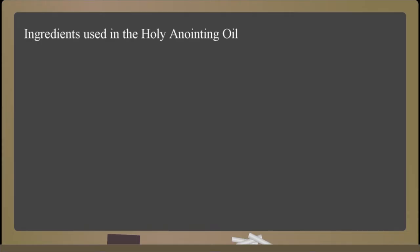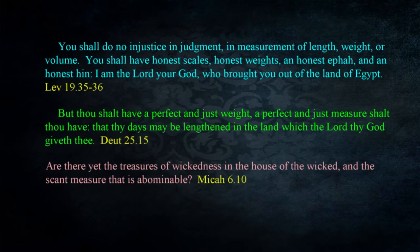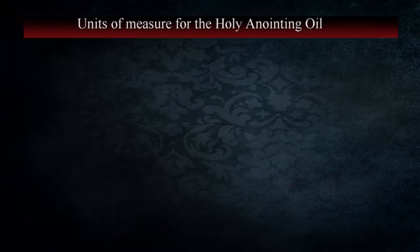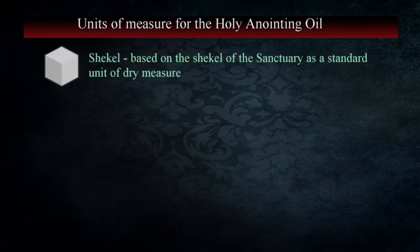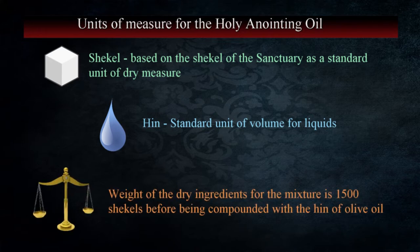The list includes myrrh 500 shekels, sweet cinnamon 250 shekels, sweet calamus 250 shekels, cassia 500 shekels, and olive oil one hin. The units of measure given would have been known to the priests and Levites at the time. God decreed that standards were to be maintained, with warnings against false units expressed in the law and prophets — Leviticus 19:35, Deuteronomy 25:15, and Micah 6:10. The shekel is based on the shekel of the sanctuary as the standard unit of weight for dry measure, while the hin was a standard unit of volume for liquids. The total weight of the dry ingredients for the mixture is 1,500 shekels.